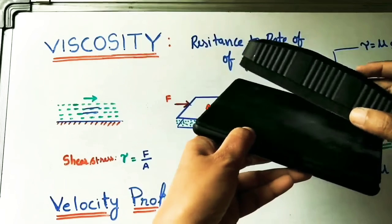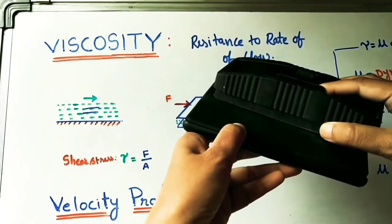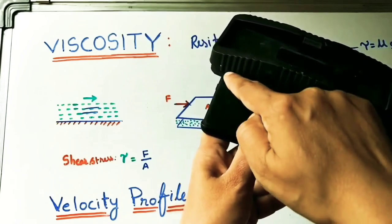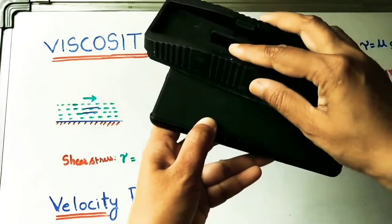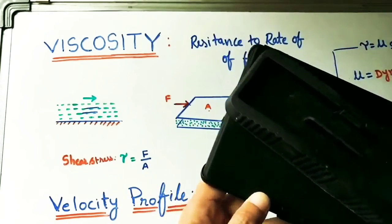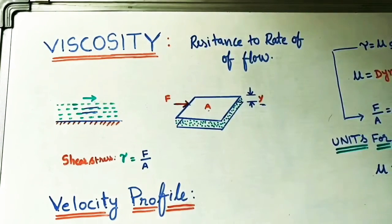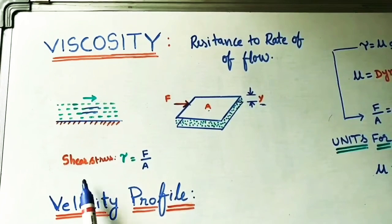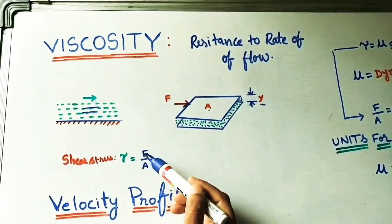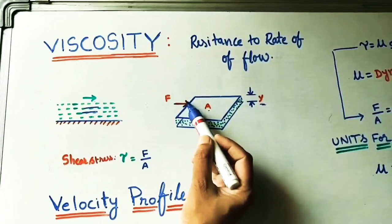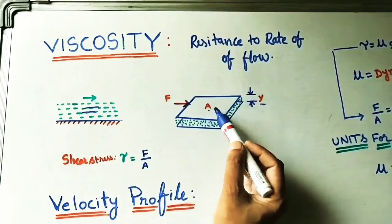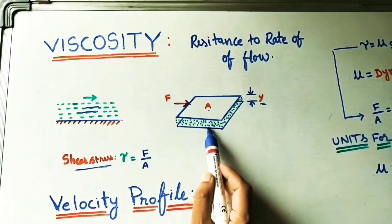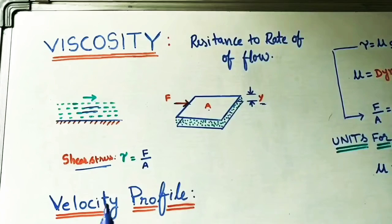Taking two surfaces — if the upper surface is moving horizontally, some shear stress will develop at the contact of the horizontal surface because of this motion. This shear stress is in the horizontal direction, denoted as tau. Tau is equal to the force causing the motion of the fluid divided by area, so shear stress tau = F/A.